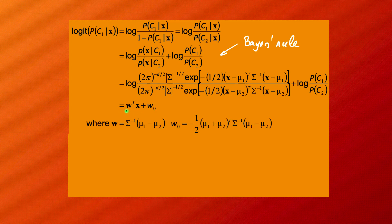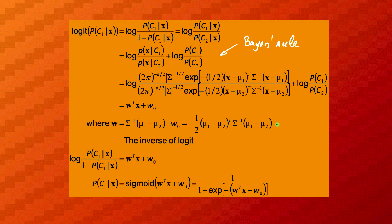We are left with something of the form W^T x plus W_0. Working out all the calculations, the weight vector is W = sigma^{-1}(mu_1 - mu_2), and W_0 = -½ (mu_1 + mu_2)^T sigma^{-1} (mu_1 - mu_2). This linear function will be useful for our classification decision.